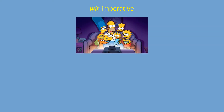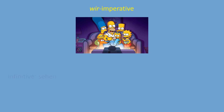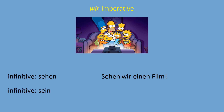The wir-imperative: you include yourself and tell a group 'let's do something.' For example, 'let's watch TV' — the verb is 'schauen.' We take the verb, put it at the beginning, then use 'wir': 'Schauen wir einen Film' — let's watch a movie. Again, there is one exception: the verb 'to be.' For example: 'Seien wir gesund' — let's be healthy. Please memorize the 'seien' form.